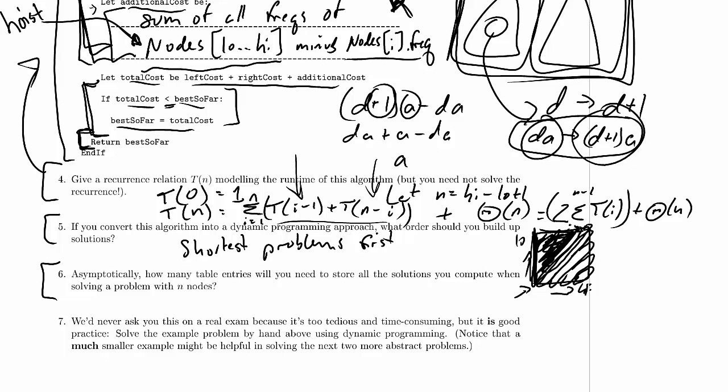So n by n divided by 2, so it's maybe n squared over 2, but so what? We're asking asymptotically how many table entries will we need, and the answer asymptotically is theta n squared. Maybe it's n squared over 2, maybe it's n minus 1 n squared over 2, regardless it's theta n squared.